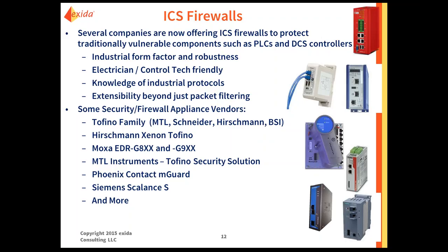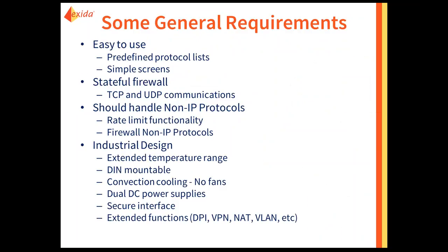Pick the vendor you are familiar with and working with. A number of vendors make firewalls for their specific networks — use those because implementation will be much easier since they're already designed for that architecture. General requirements to make life easier: predefined protocol lists for industrial protocols like Modbus, Ethernet IP, DNP3, FTE, and Delta V, so you can select them from a list instead of defining them yourself.